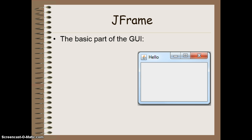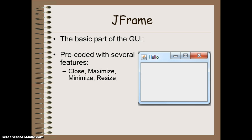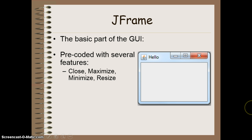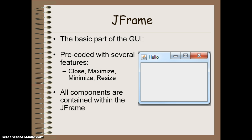The first thing we need to know is that we have something called a JFrame. This is the basic part of your GUI, and it looks like the picture on the side here. The advantage of having a JFrame is that it's already pre-coded with several features — things like closing the window, maximizing and minimizing, and resizing by grabbing the corners. All the components we create are going to be contained inside of this JFrame.